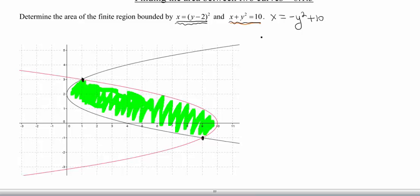Let's swing that y squared over. So x is going to be equal to negative y squared plus 10. So now I can go ahead and set those two functions equal to each other. So I have y minus 2 squared is negative y squared plus 10. Let's go ahead and multiply this out. So I'm going to get y squared minus 4y plus 4.